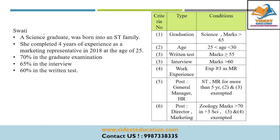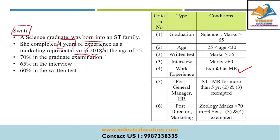The next candidate profile is Swati. She is also a science graduate and she was born into an ST family. She has completed 4 years of experience, fulfilling that criteria. In 2018, her age was 25. Since she belongs to the ST category, criteria 2 and 3 — the age and the written test — can be exempted.